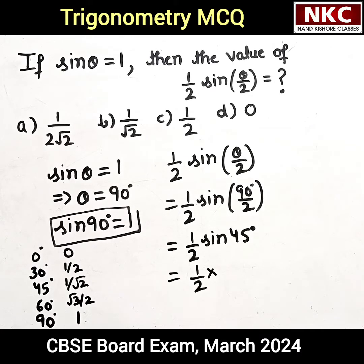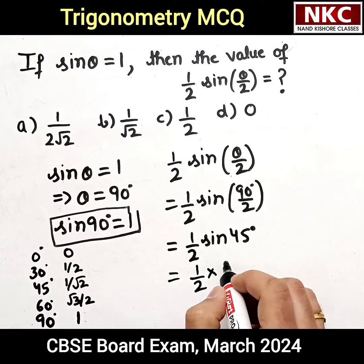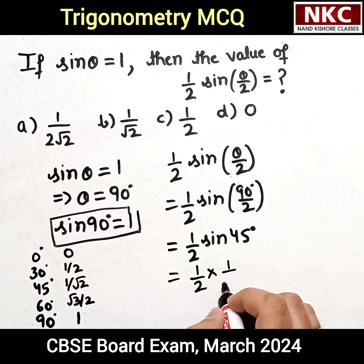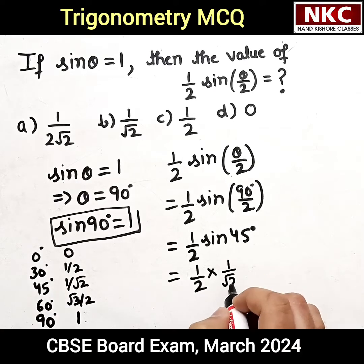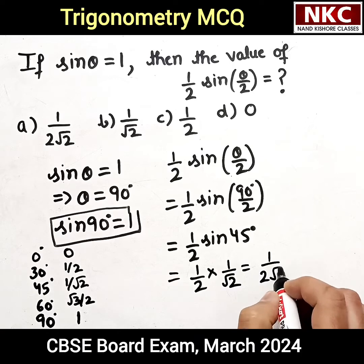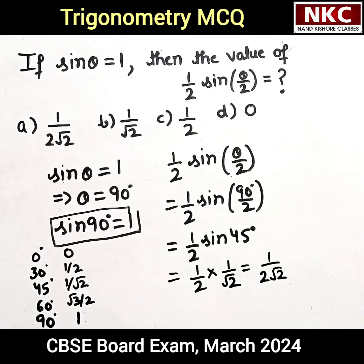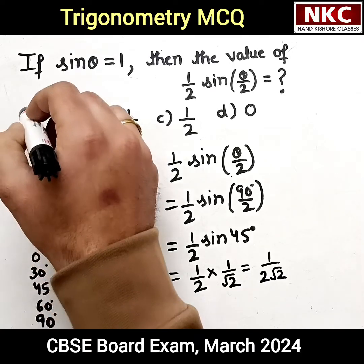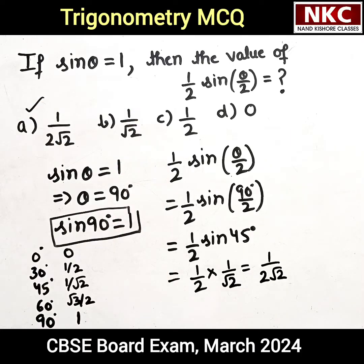Since sin 45° is 1/√2, the answer becomes 1/(2√2). So option A is the correct answer. I hope you are clear with this question. Thank you so much.